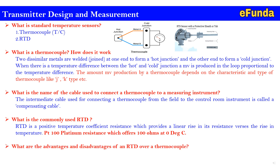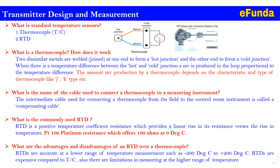What are the advantages and disadvantages of an RTD over a thermocouple? RTDs are accurate at the lower range of temperature measurement, such as minus 200 to plus 200 degrees Celsius, which is a narrow or lower band. RTDs are expensive compared to thermocouples and have limitations in measuring at higher temperature ranges, unlike thermocouples.